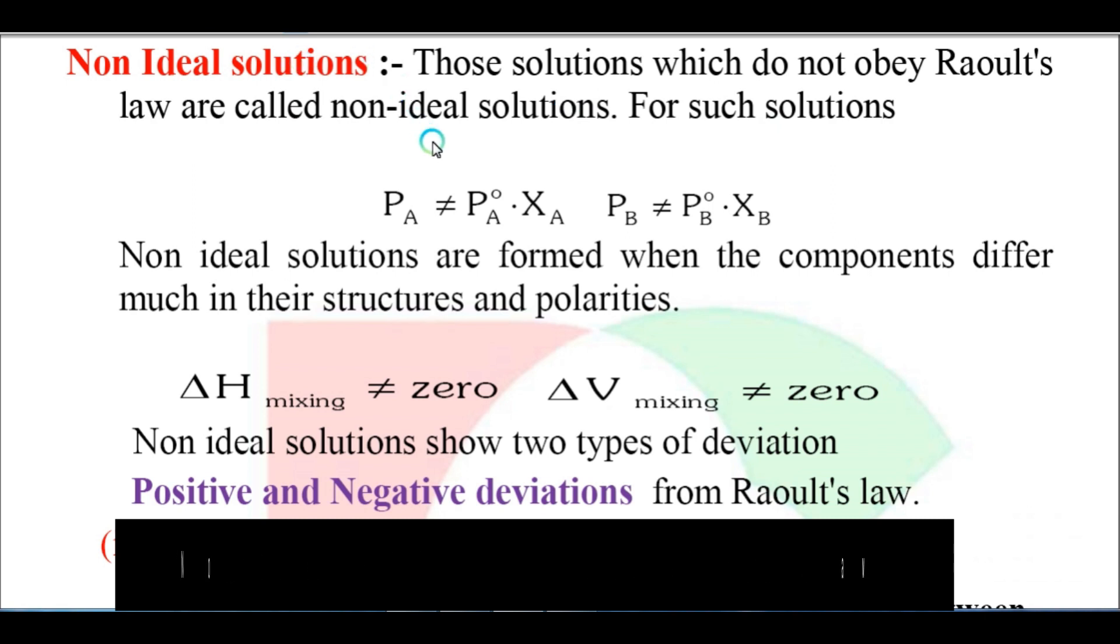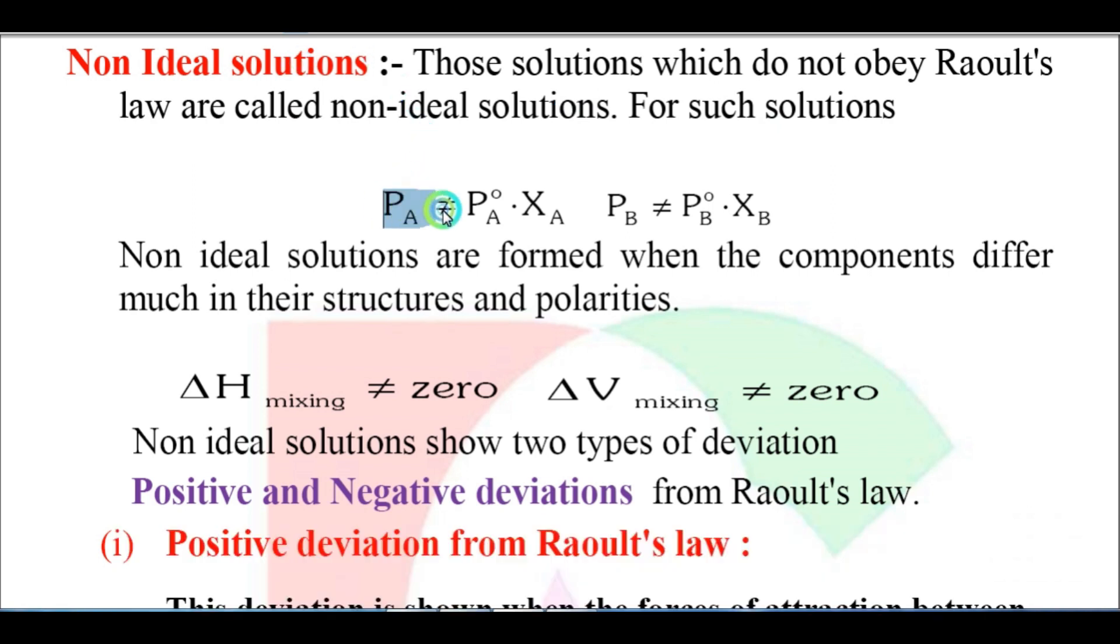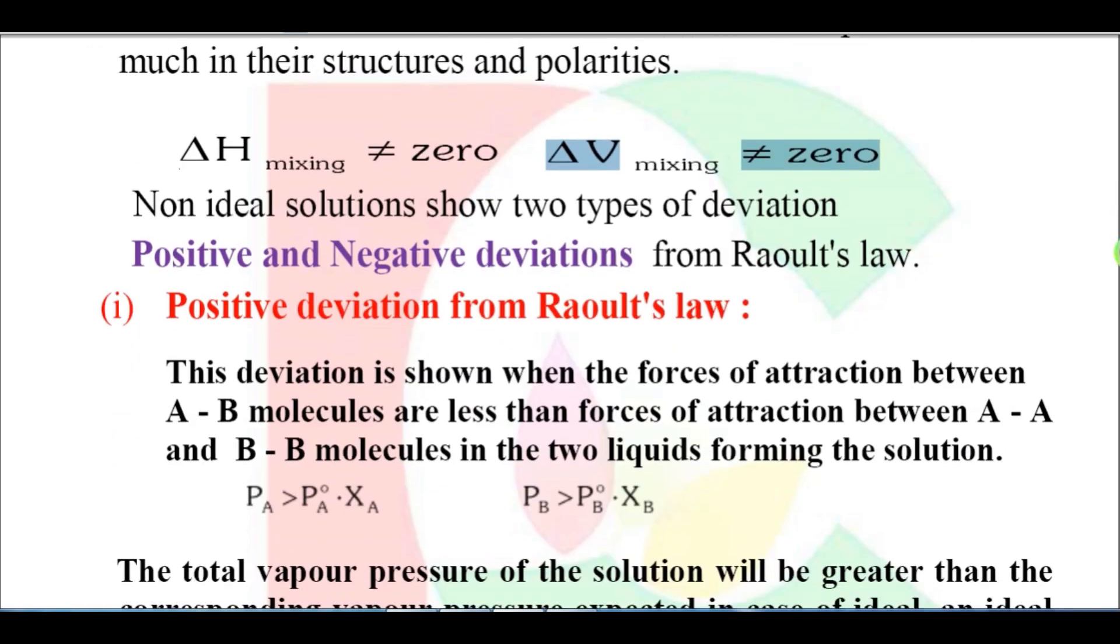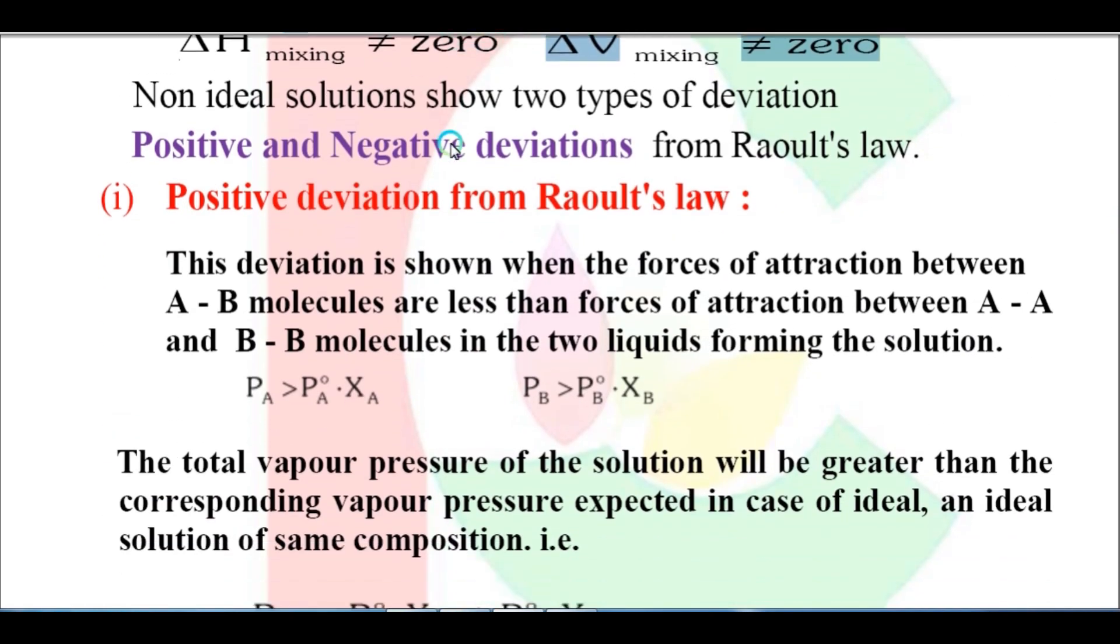Now let's see non-ideal solutions. For non-ideal solutions, partial pressure of A is not equal to P_A° times mole fraction of A, and P_B is not equal to P_B° times X_B. The enthalpy of mixing cannot be zero, and volume of mixing cannot be zero. The interaction between solute and solvent determines whether we have positive or negative deviation, which is our main topic.